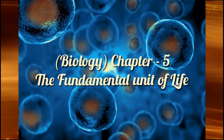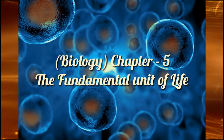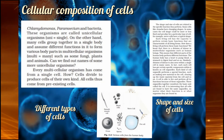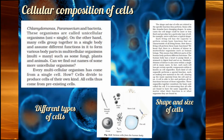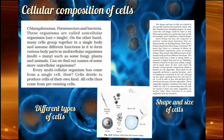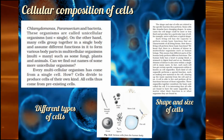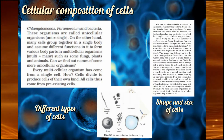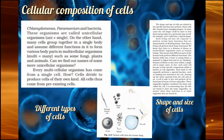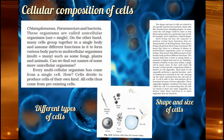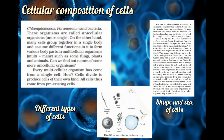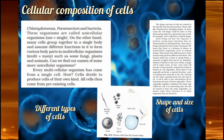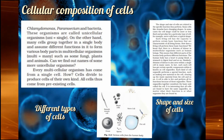Chapter 5: The Fundamental Unit of Life. In the last video, we studied about two different types of organisms — unicellular and multicellular — and functions of cells. We also studied that there are different varieties in shape and size of cells. So now, let us study about the structural organization of a cell.